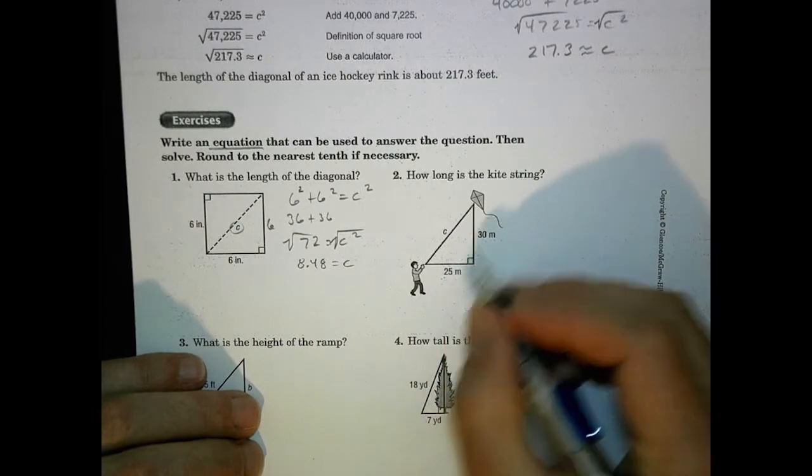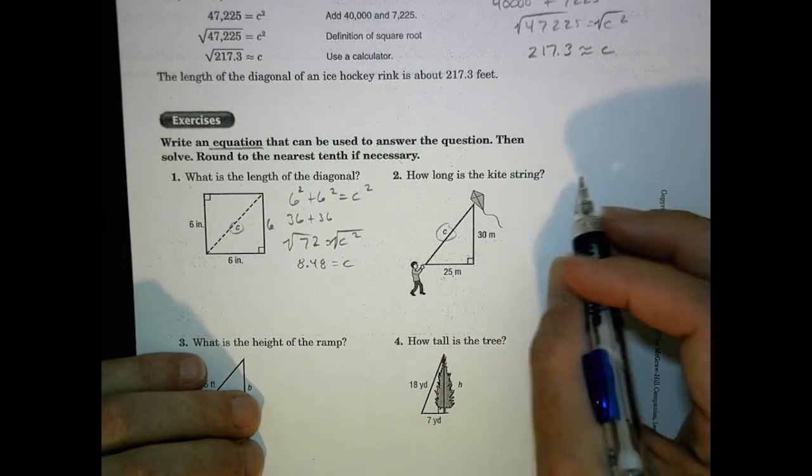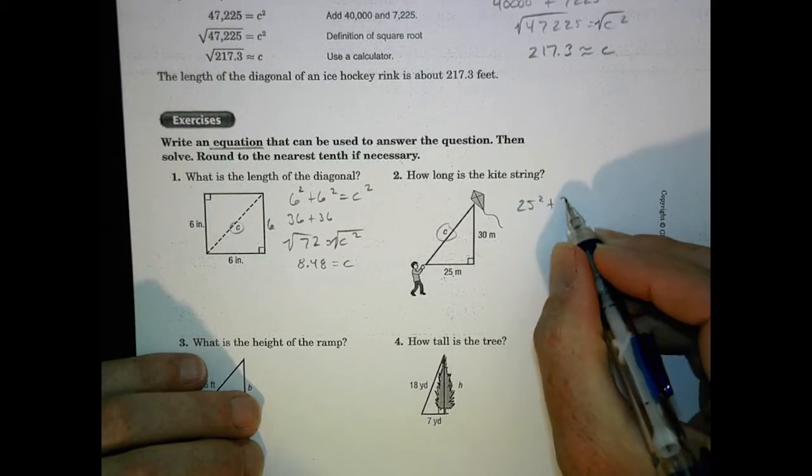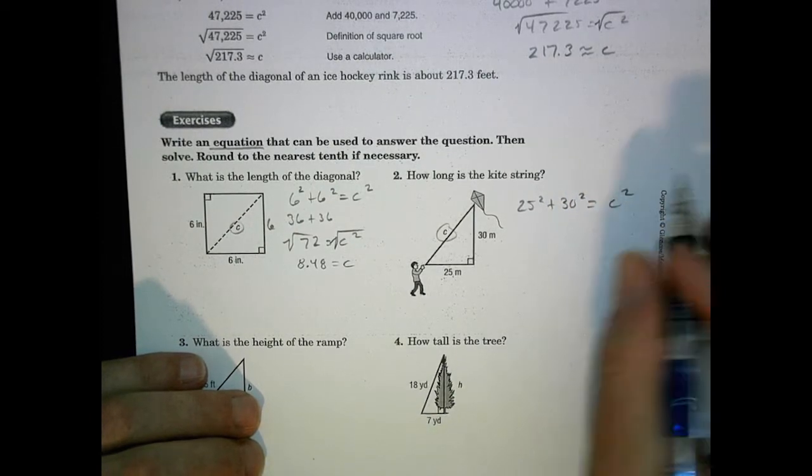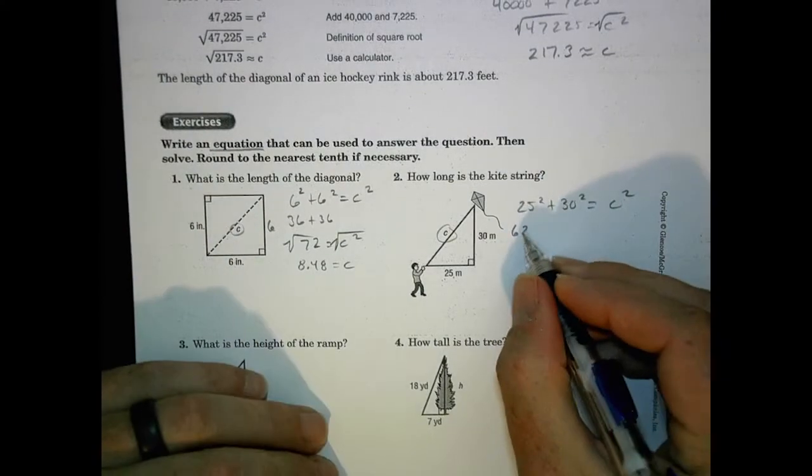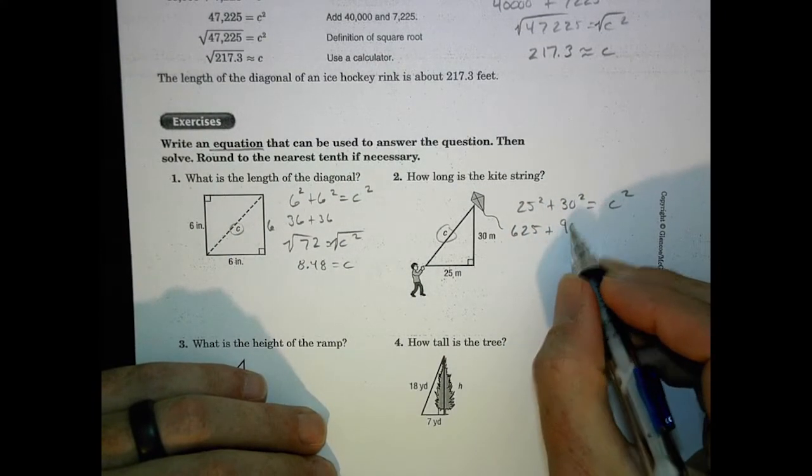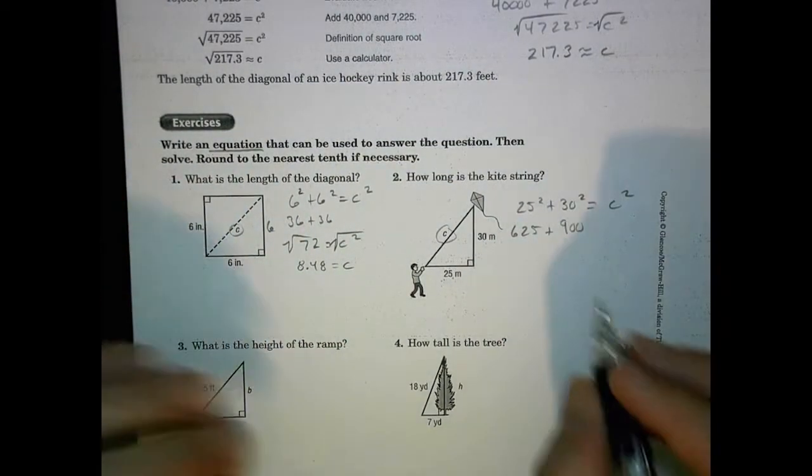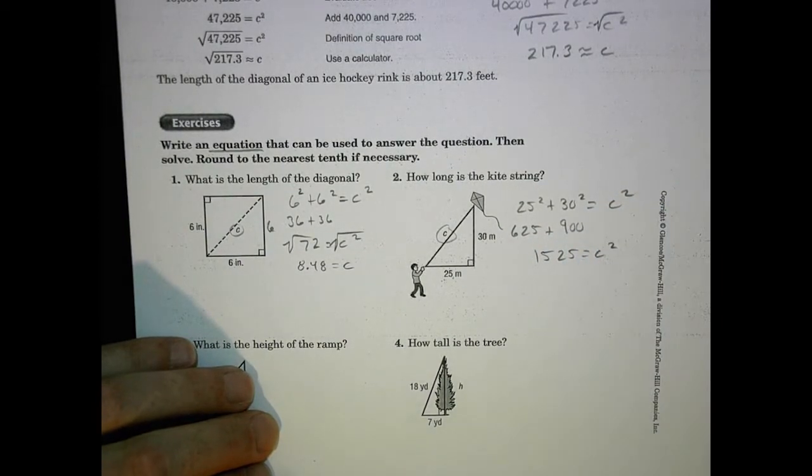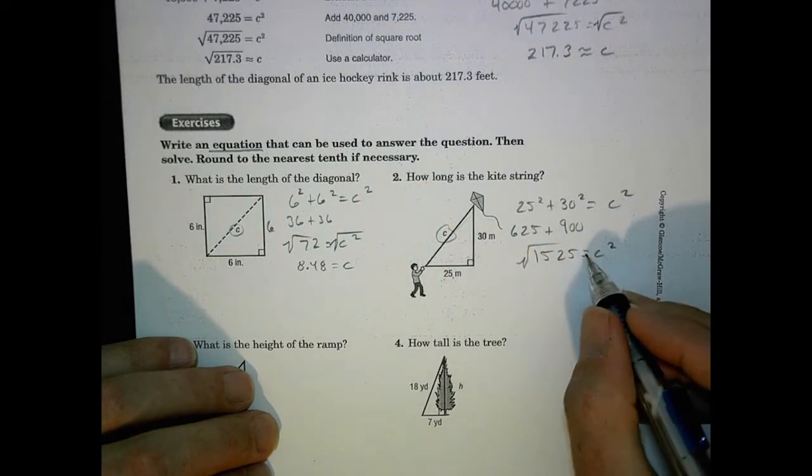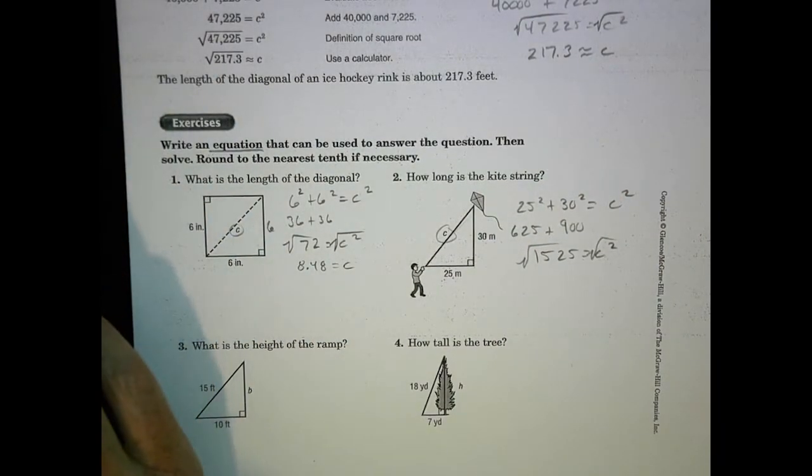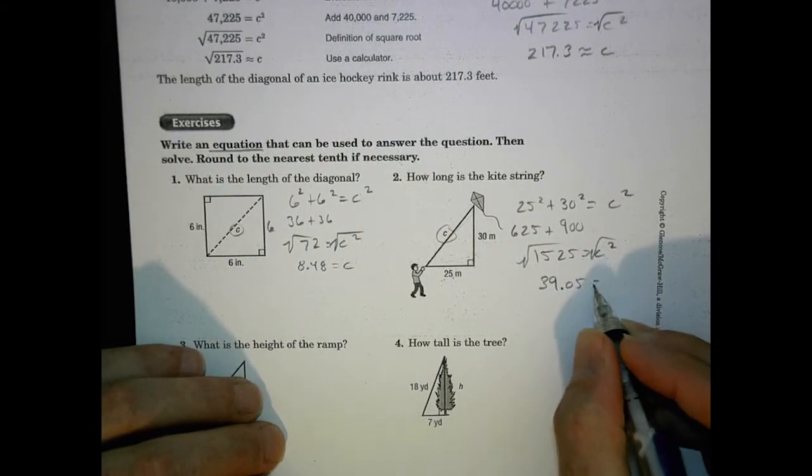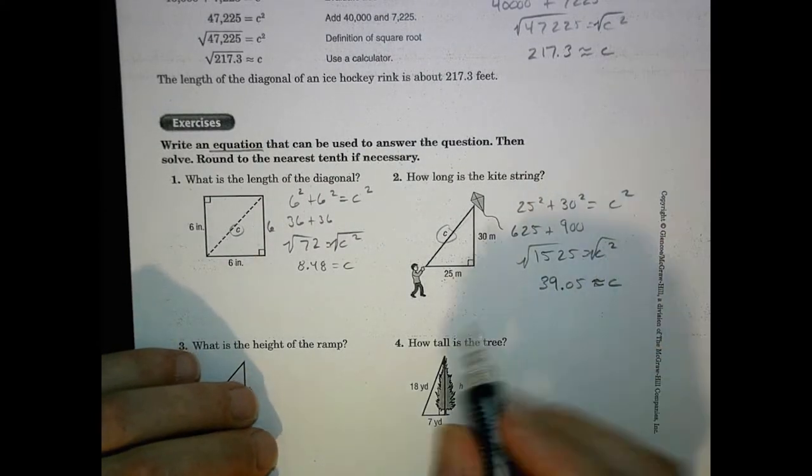Now over here, we have two legs and we need a c value there. So we can do the same thing. And so for this one, we're going to go with 25 squared plus 30 squared equals c squared. So again, 25 times 25 is going to give us 625. 30 times 30 is going to be 900. So I have a whole 900 plus 625, which is 1525 equals c squared. Now to find out what the distance is there, square root of both sides, and 1525, we end up with about 39.05 for the value of c, approximate value of c, which is kind of cool.